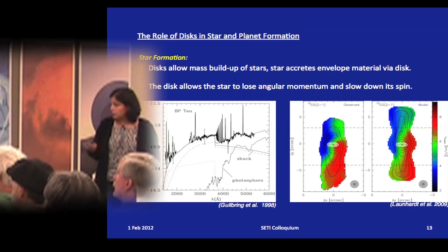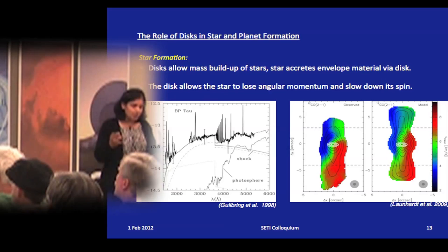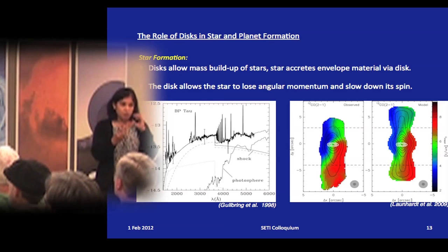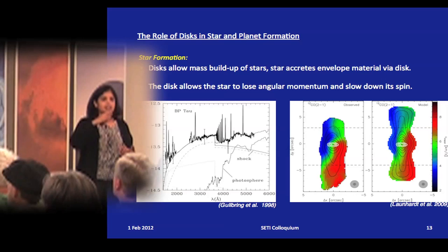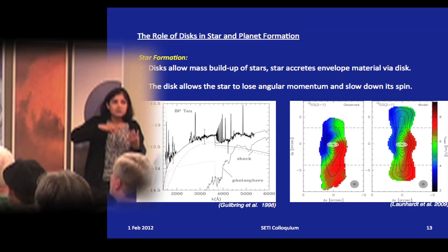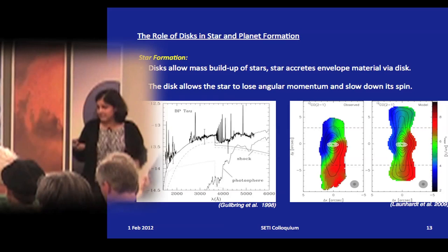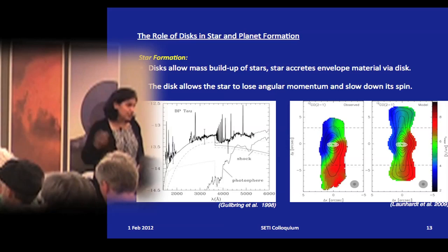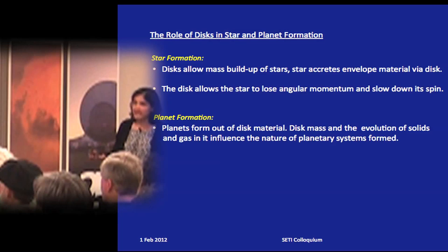The disc also loses angular momentum — here is a wonderful image of a disc in a globule showing CO outflow. The blue shows material moving towards you and red shows material moving away, demonstrating clear rotation of the jet. The jet rotation direction is the same as the disc rotation, measured independently, clearly showing that angular momentum is carried away by the jet. This allows the star to lose angular momentum and slow its spin.